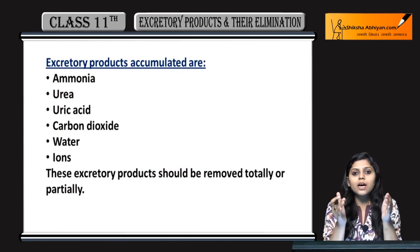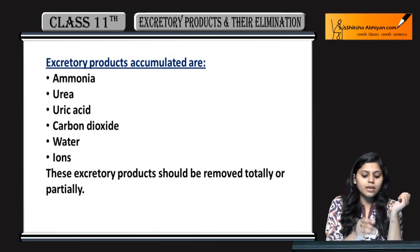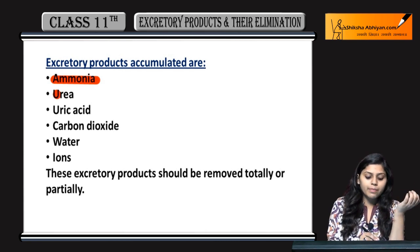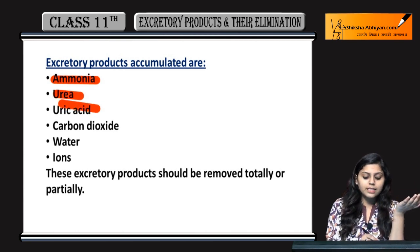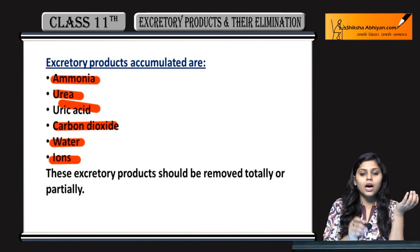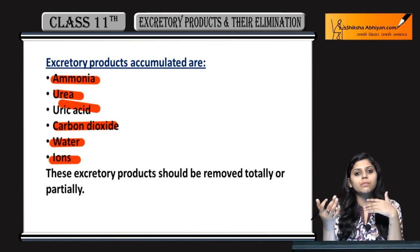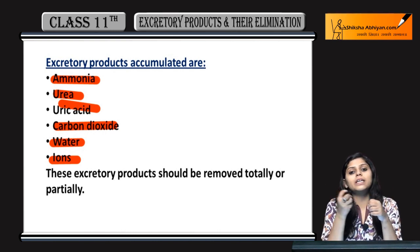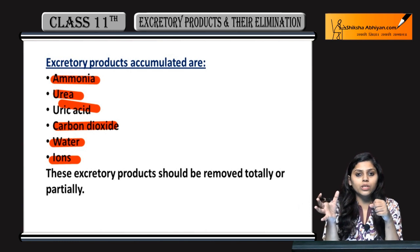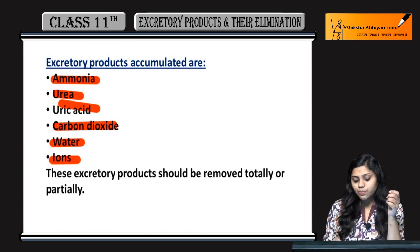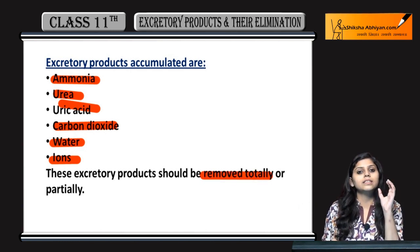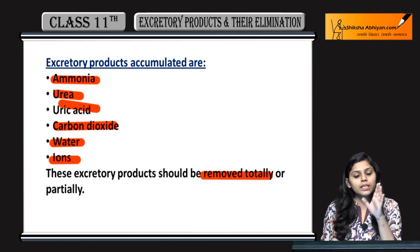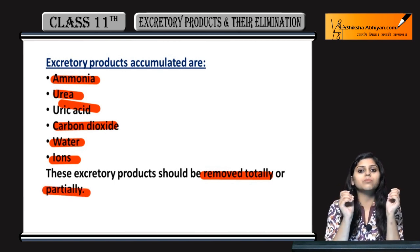Excretory products jo accumulate hote hain, they include ammonia, urea, uric acid, carbon dioxide, water, and ions like sodium, potassium, phosphate, and sulfate. These substances need to be eliminated from the body — they may be totally or partially excreted out.